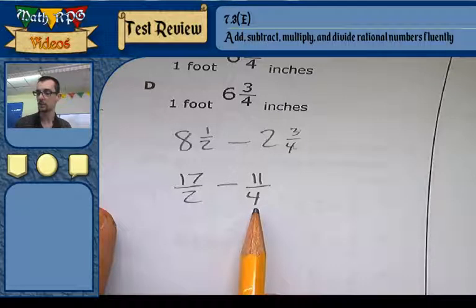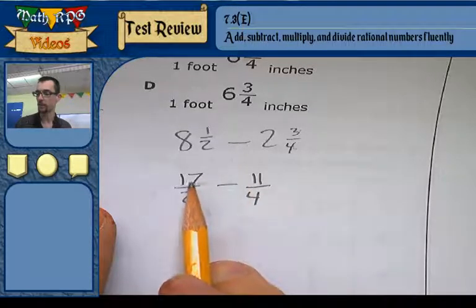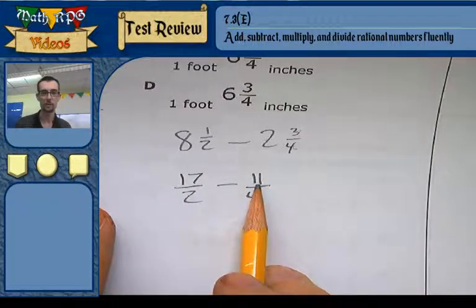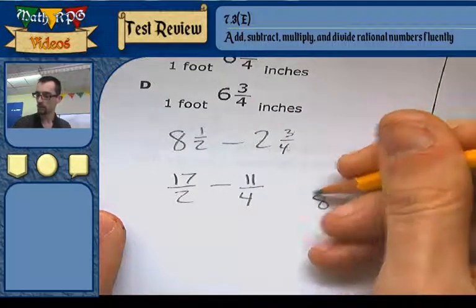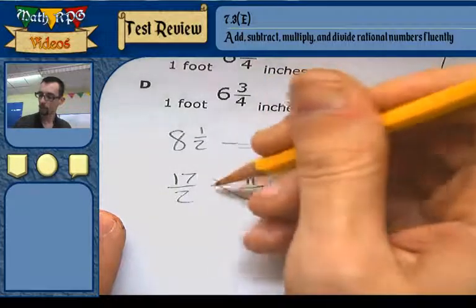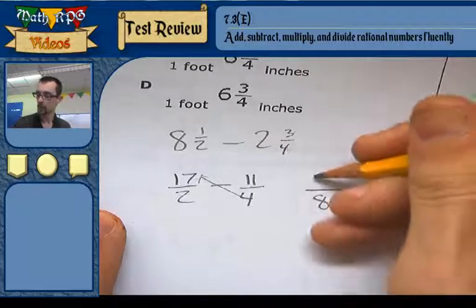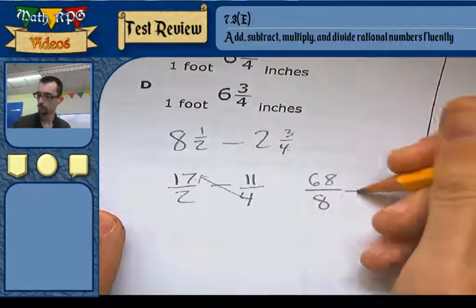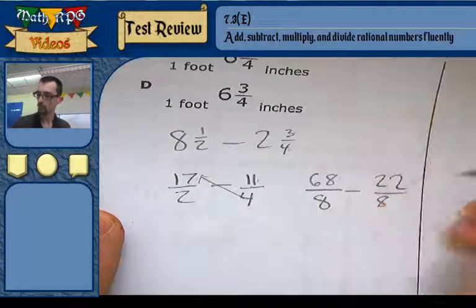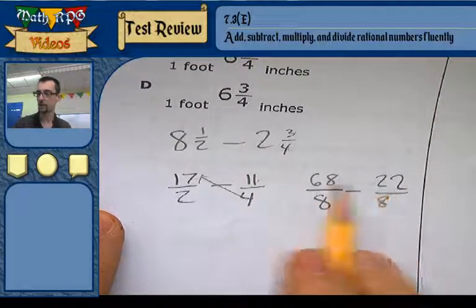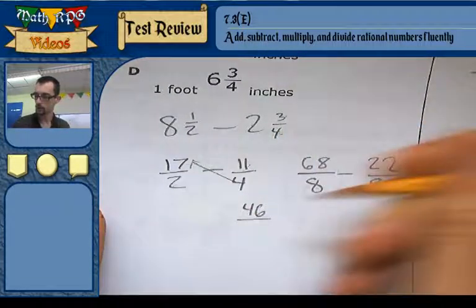In class we said that the easiest way to do that would be multiplying straight across. So if I multiply 2 times 4, no that's not how I would do it. Well, I almost messed up here. If I multiply the denominator straight across, that gives me 8. Then I have to multiply my numerators diagonally. So 4 times 17 gives me 68. And over here I have 2 times 11, which is 22. And if I do my subtraction now, 68 minus 22 is 46.